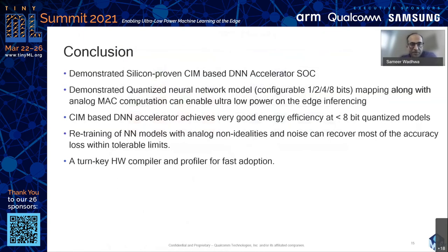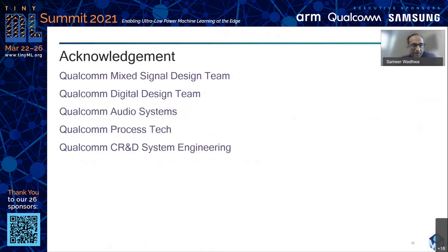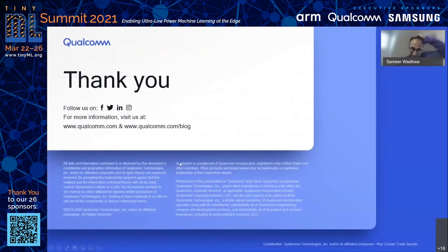In conclusion, I've demonstrated a silicon-proven CIM-based accelerator that can run models with configurable 1, 2, 4, and 8-bit quantization levels. It achieves very good energy efficiency for less-than-8-bit quantized models. We have a retraining flow to account for hardware non-idealities, and it comes with a hardware compiler and profiler for fast adoption. If you're a system developer or model developer who wants to see how your models run on a CIM-based platform, please feel free to reach out to me.